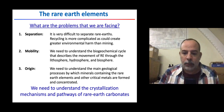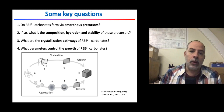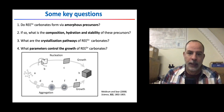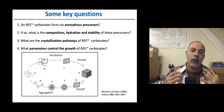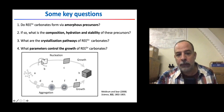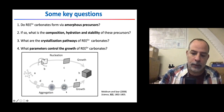What we need is to understand the crystallization mechanisms and pathways of rare earth carbonates. The key questions are: do rare earth carbonates form via amorphous phases, as calcite and dolomite do? If so, what is the composition, hydration, and stability of these amorphous phases? We know that carbonates can form by classical pathways — directly from solution — or non-classical pathways involving amorphous phases that later crystallize into more stable polymorphs.